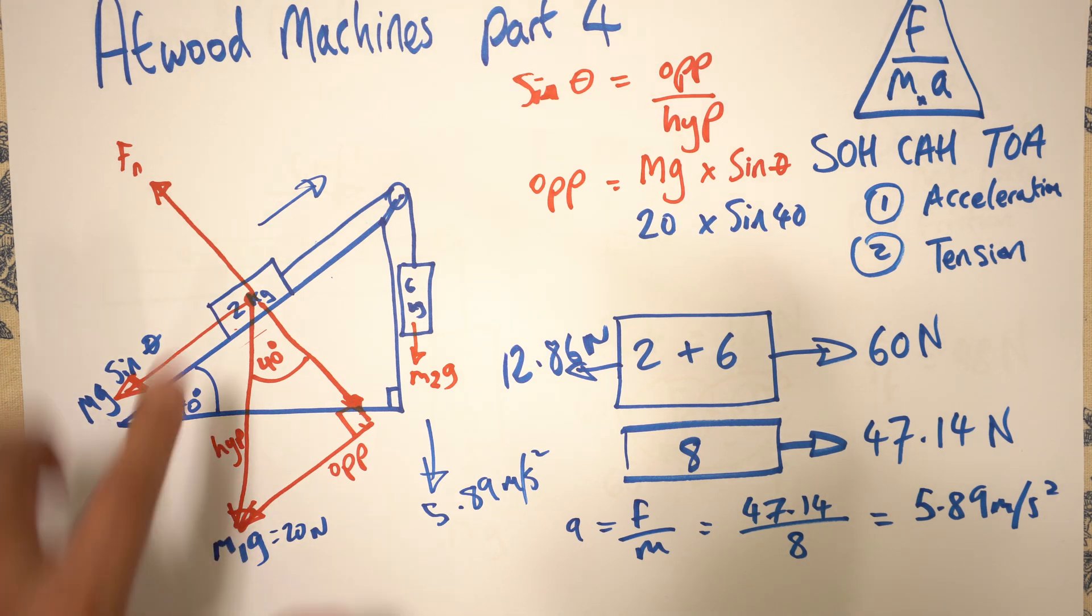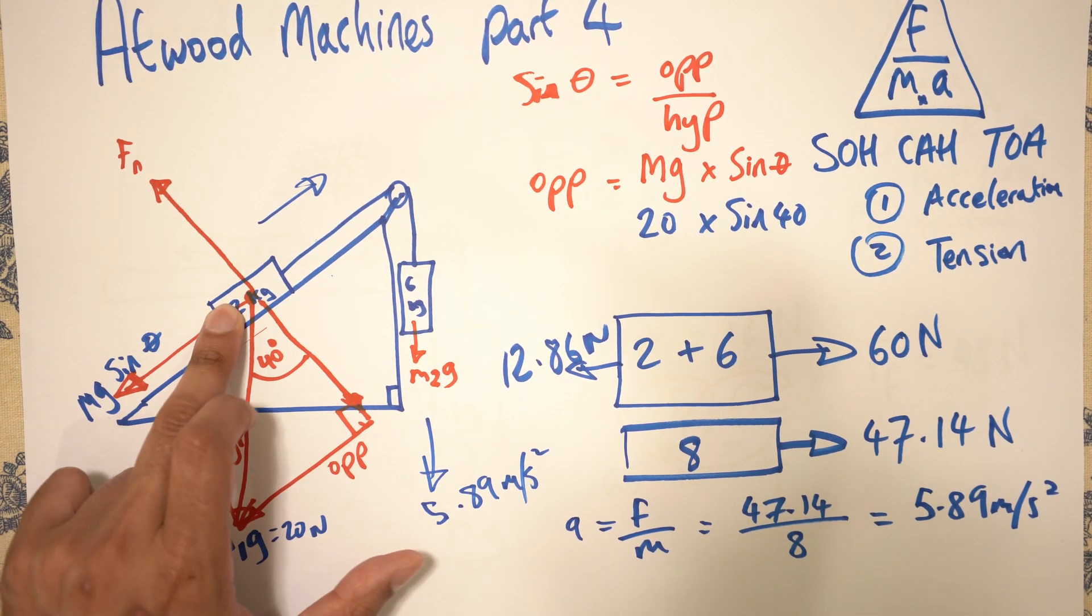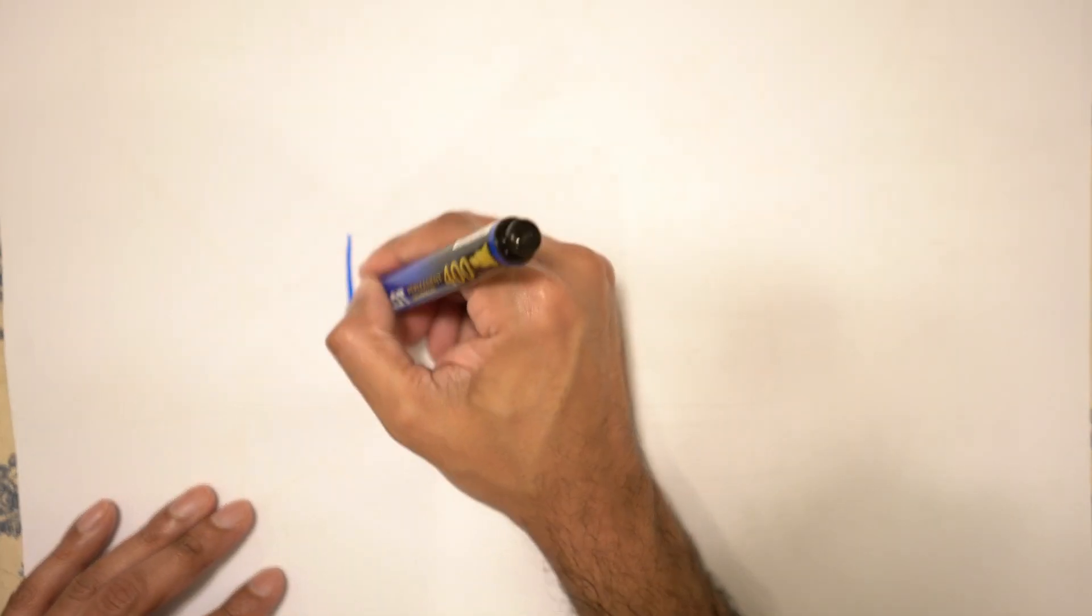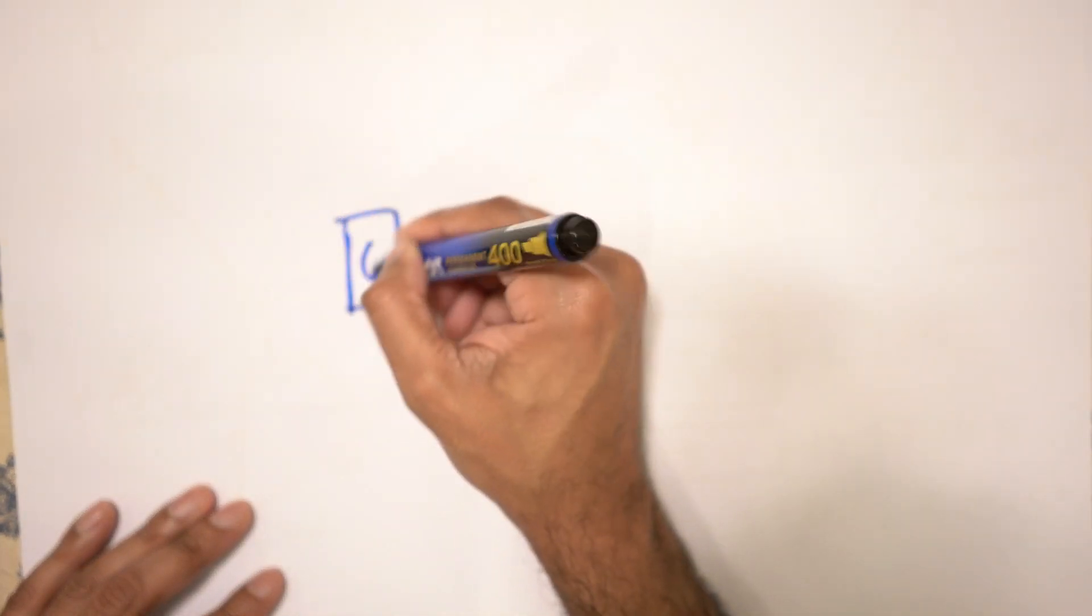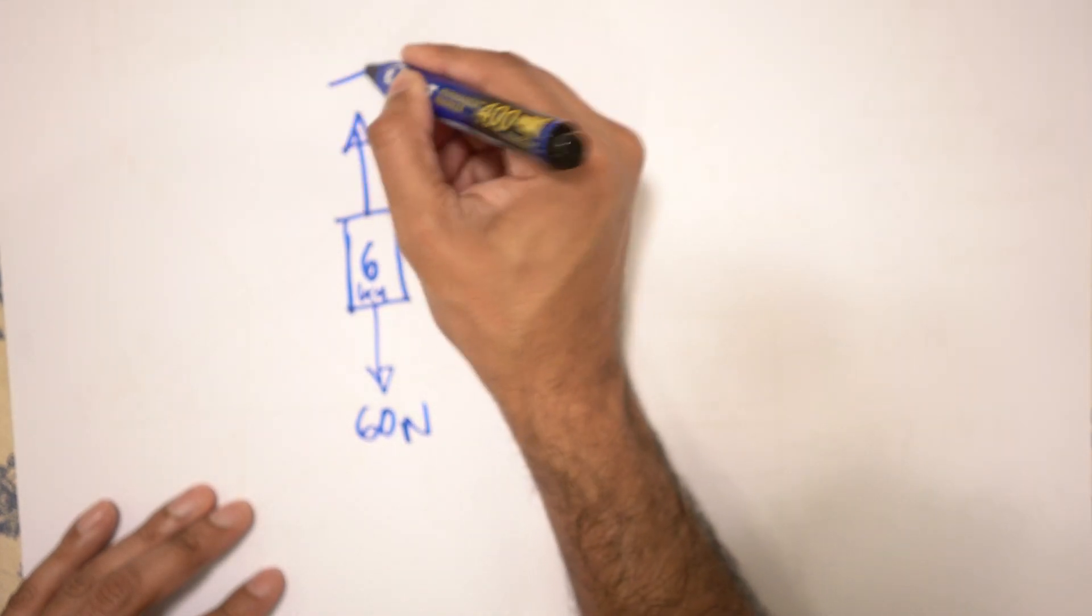Now just as before, what we want to do is we want to look at one of these masses. You can look at this one or this one. I'm going to have a look at that one. So what we have is we have a mass, which is 6 kg. You got 60 Newtons down and you got a tension force upwards.